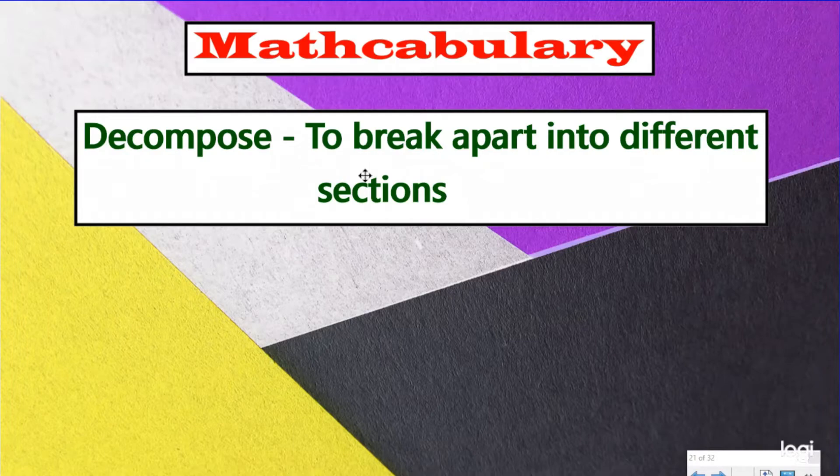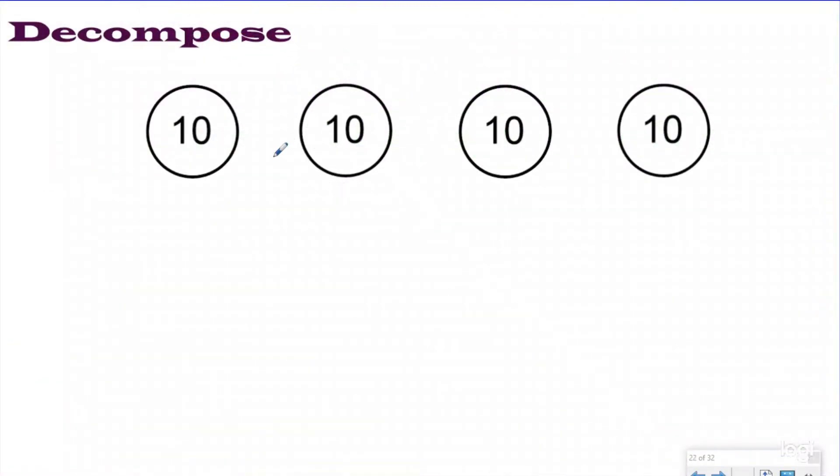Let's take a look at an example and see this math vocabulary in action. We're going to make some number bonds. We're going to decompose 10, break it apart into smaller different sections. How could I break apart 10 into smaller groups? I'm going to do 9 and 1. I can decompose 10 into a group of 9 and a group of 1.